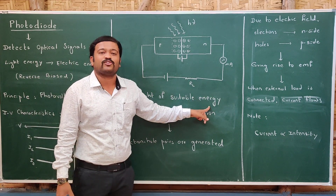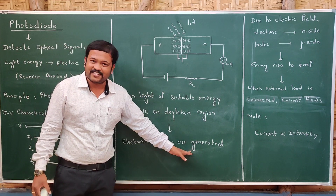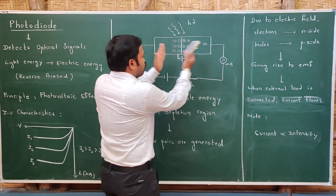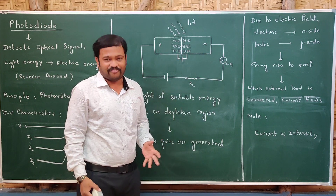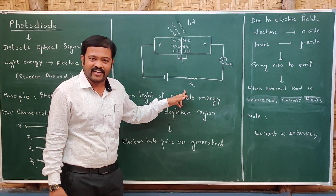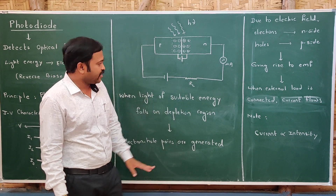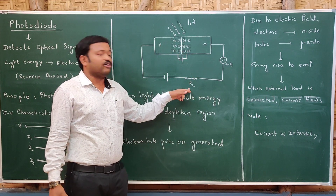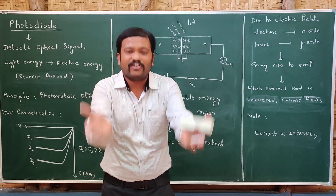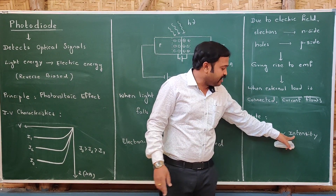When light of suitable energy — meaning the energy of light must be greater than the energy gap — falls on the depletion region, electron-hole pairs are generated. Due to the electric field, electrons move towards the N side and holes move towards the P side, giving rise to an EMF. When an external load is connected, current flows. The current depends on the intensity of incident light: as intensity increases, the number of photons increases, meaning more electrons jump from valence band to conduction band, and hence current increases.